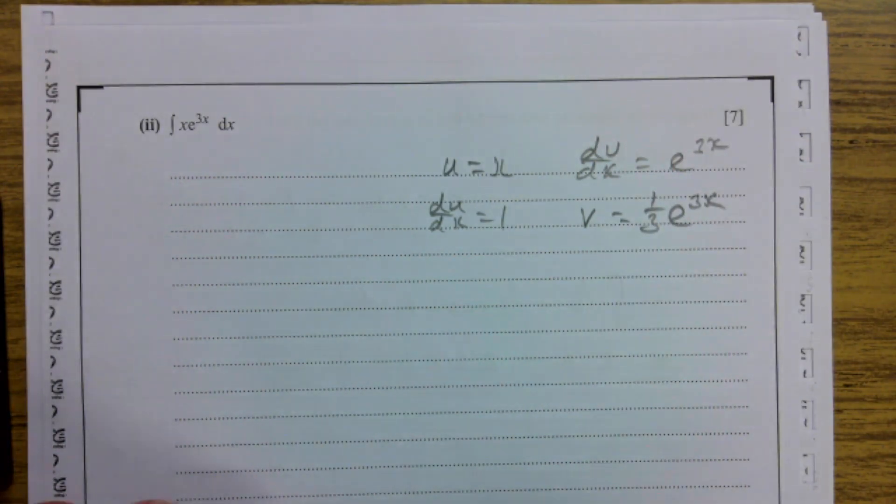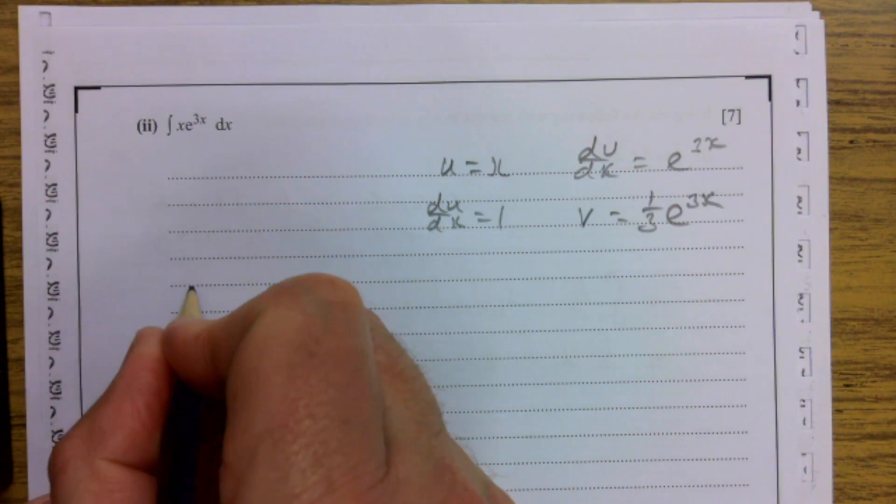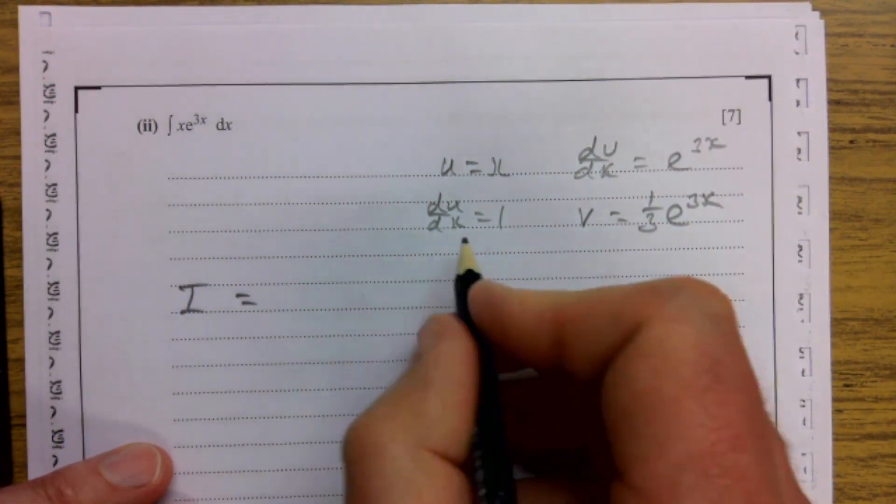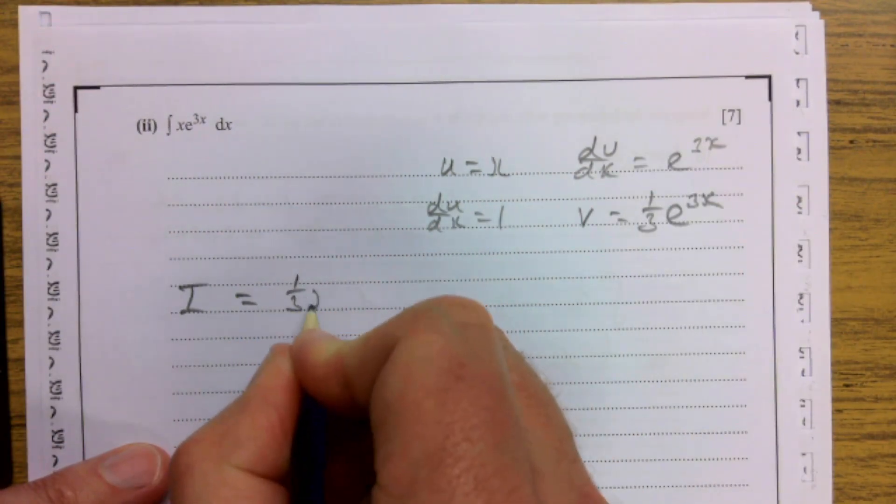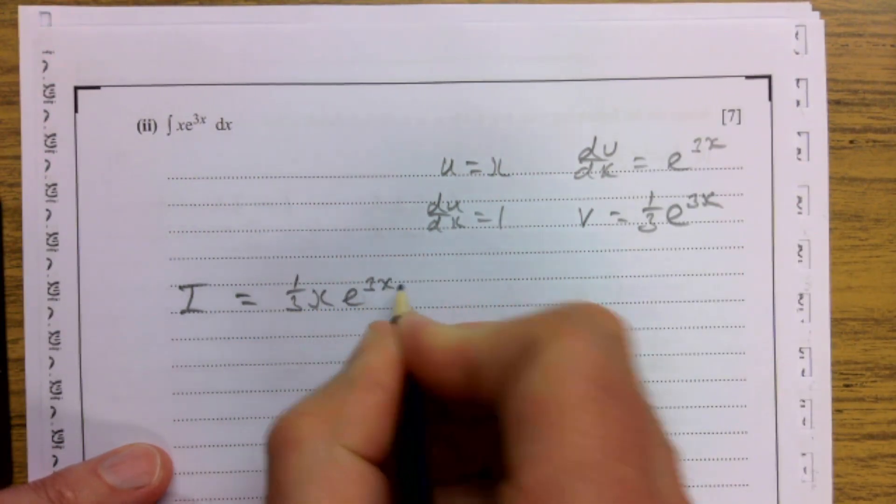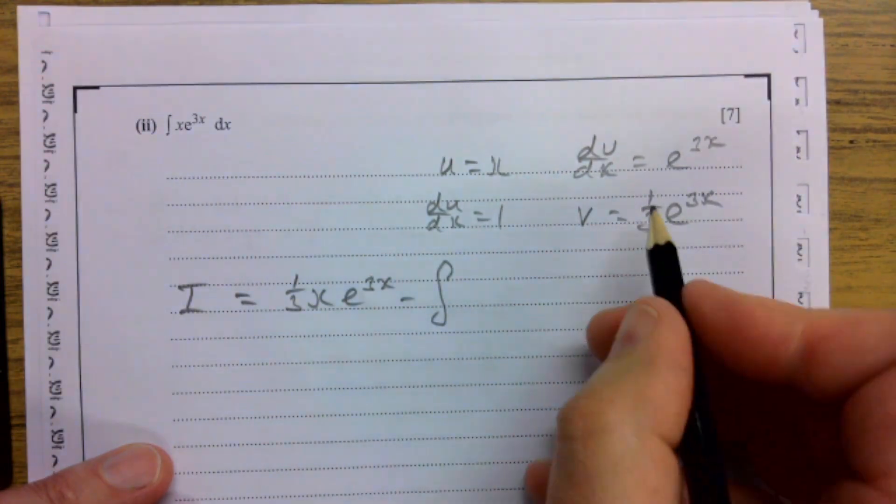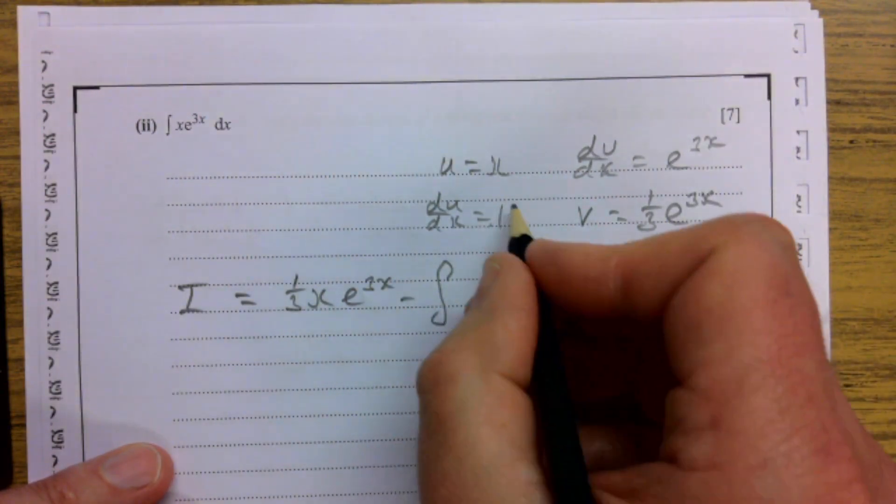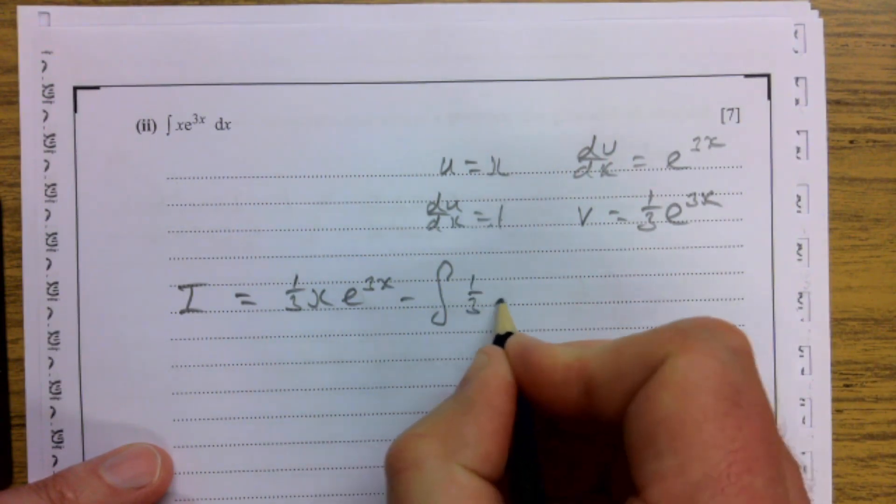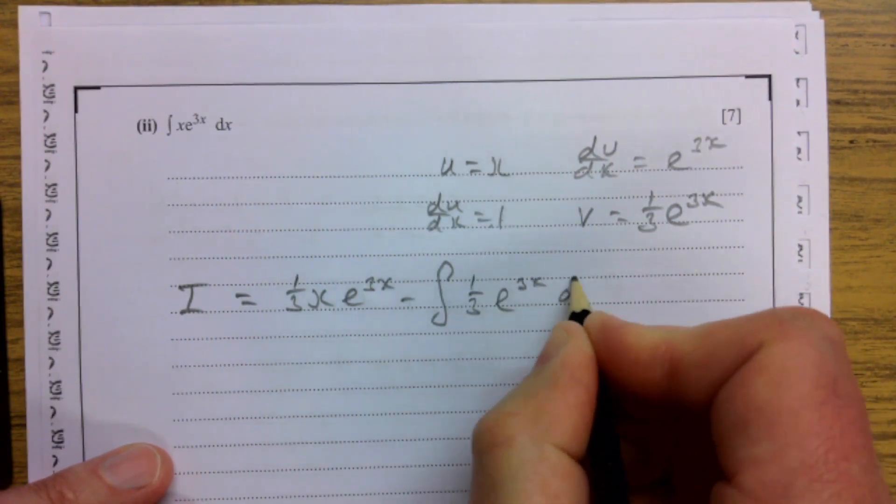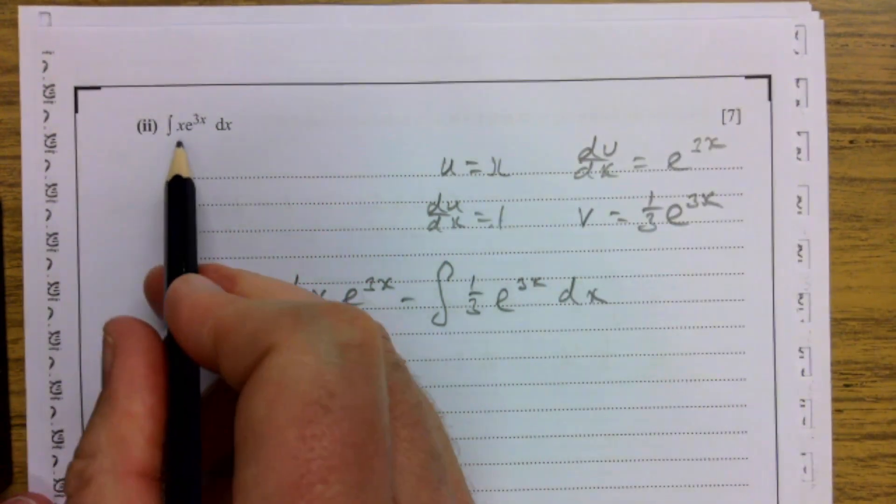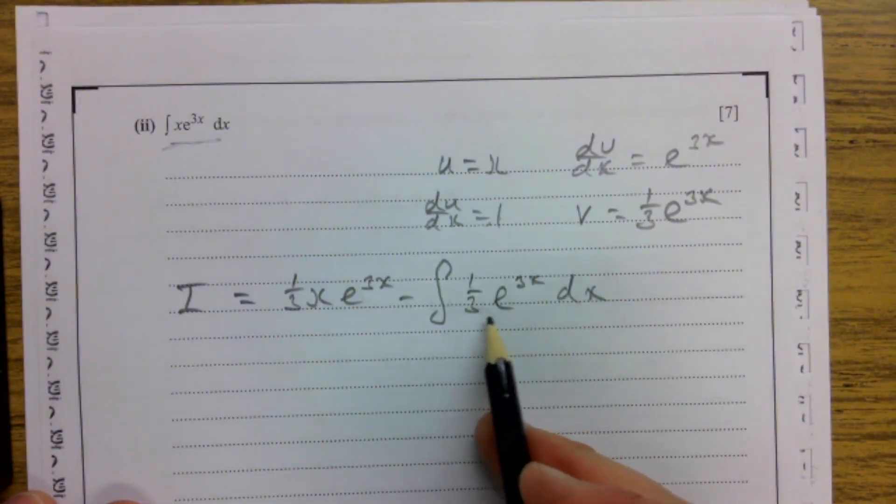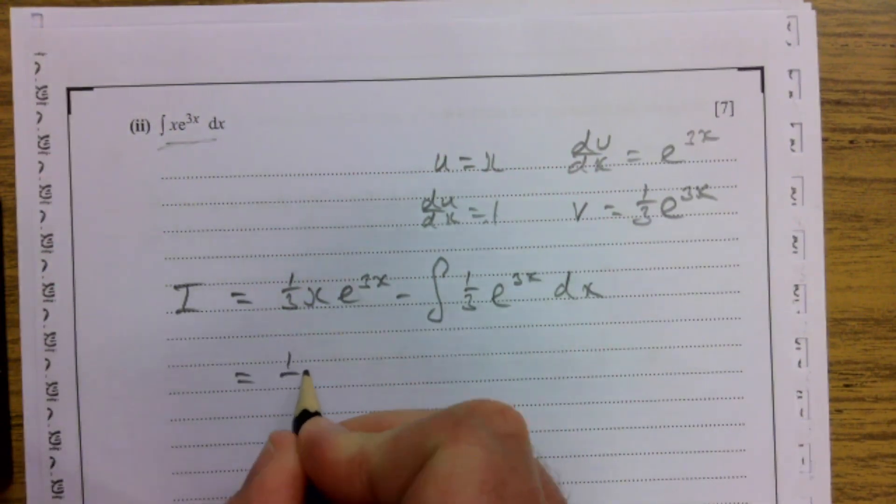So the integral becomes uv, so that's going to be a third x e to the 3x minus the integral of v du by dx. So it's going to be one times this, so it's a third e to the 3x dx. We've changed a messy integral into one that's very doable.